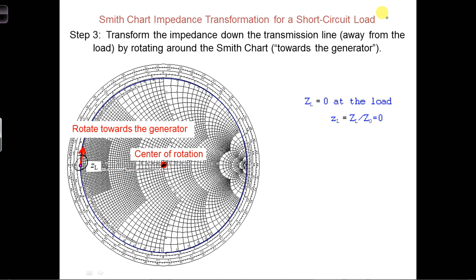We're rotating, in this case, along the circle of constant r equals 0, which means that the real part of the input impedance is always 0.